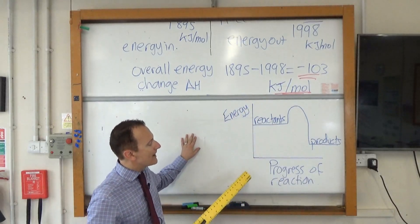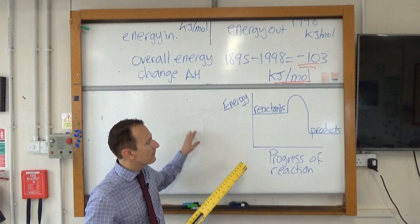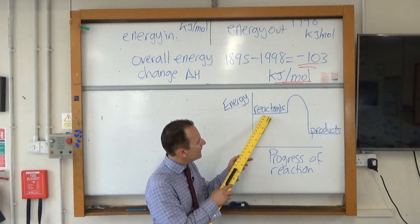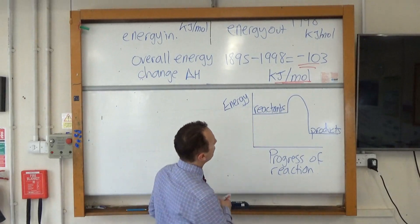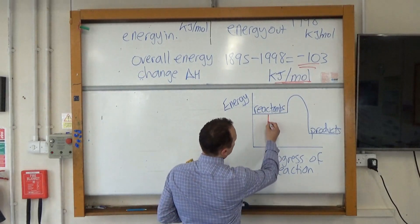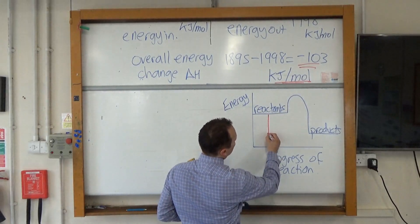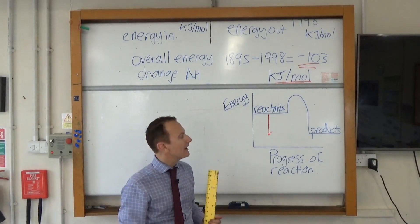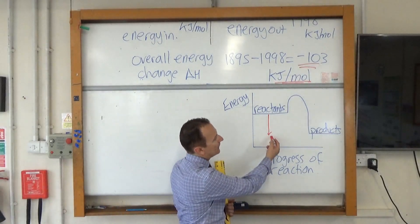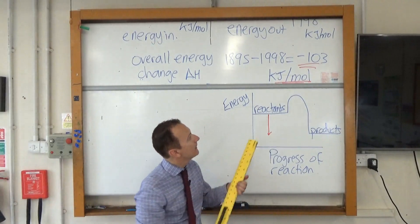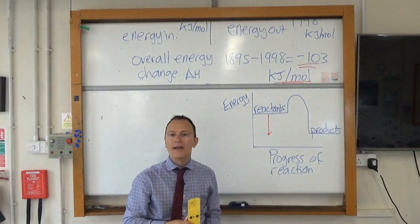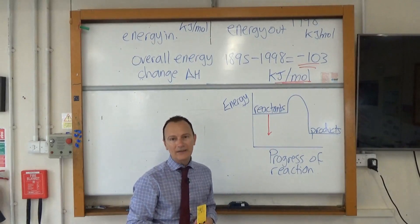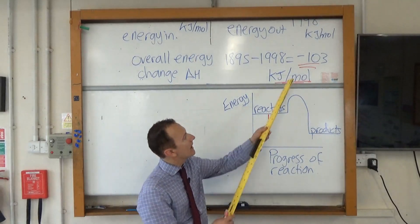The reaction profile of an exothermic reaction is this shape. The overall energy change — which I can draw in red — would be here, and it's going down: the chemicals overall are giving out energy so their energy level is dropping. That's why it's a negative number. So if delta H is negative it's an exothermic reaction; if you get a positive number for this answer it's an endothermic reaction.